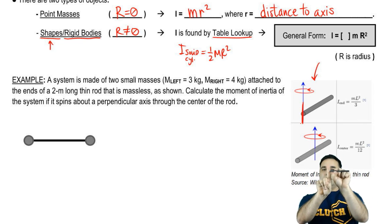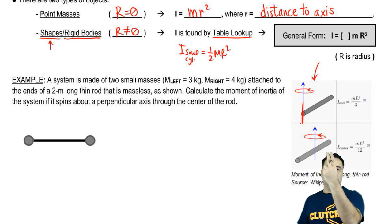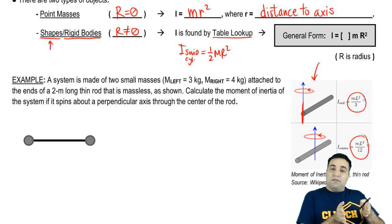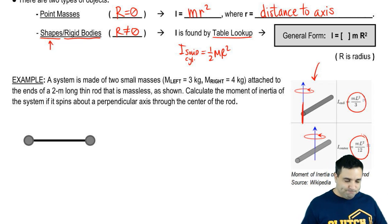It's different than if you're spinning it in the middle like this. Notice how these equations are different. This is 1 over 3 ml squared, and this is 1 over 12 ml squared. It's because for moment of inertia, where you spin matters.